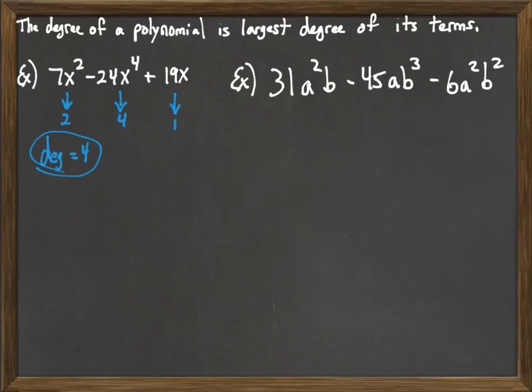As another example, consider this polynomial where we have a mixture of different variables. 31a squared b minus 45ab to the 3rd minus 6a squared b squared. And so again, as we look at this problem here, we're going to look at each one in turn. And since we have multiple variables, we're going to have to total up the exponents.